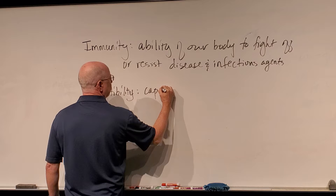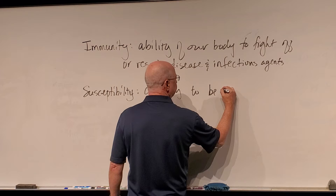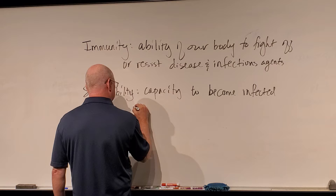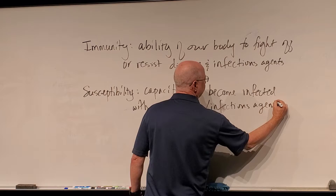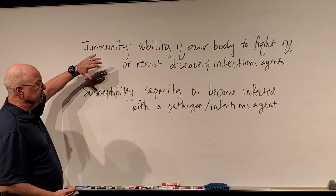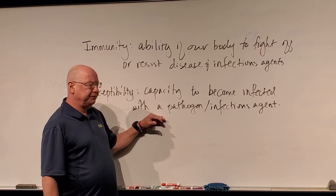Susceptibility is the capacity to become infected with a pathogen, or sometimes I say infectious agent. So these two things are pretty much opposites: immunity is our ability to fight off infectious agents and pathogens, and susceptibility is our capacity to be affected — how likely you are to get infected.